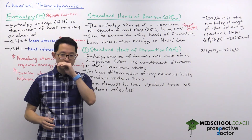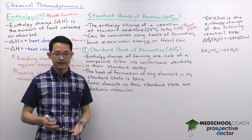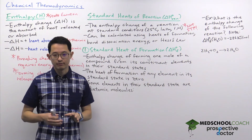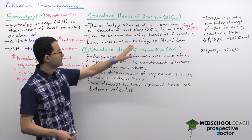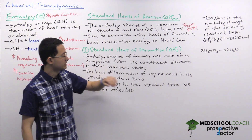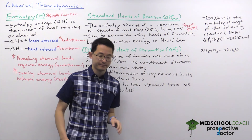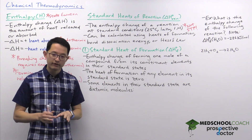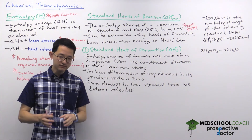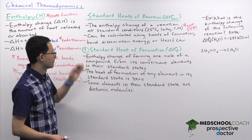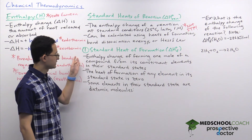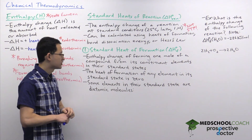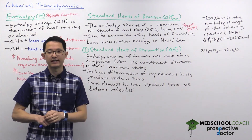For the MCAT, you're expected to be able to calculate the heat of reaction, and there are several ways to do that: using the heats of formation, bond dissociation energies, or Hess's law. In this video we're going to talk about heats of formation, and in later videos we'll cover the other two methods. A heat of formation is defined as the enthalpy change of forming one mole of a compound from its constituent elements in their standard states.